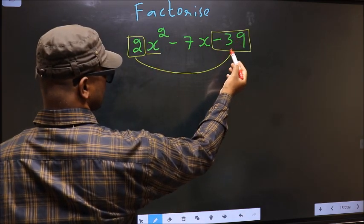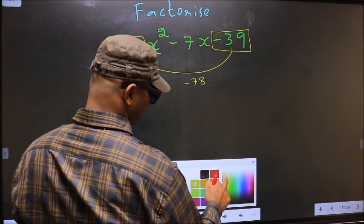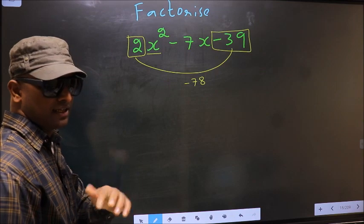So 2 into -39 is -78. This is your step 1. Next.